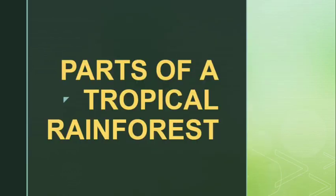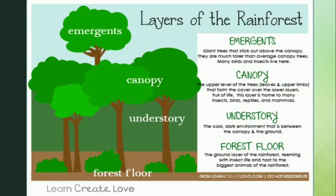Now we will talk about the parts of a tropical rainforest. Look at this diagram. In tropical rainforests, the plants form different layers. We have four main layers — that is the emergent layer, canopy, understory, and the forest floor. Let's talk about them one by one.